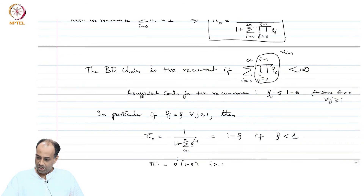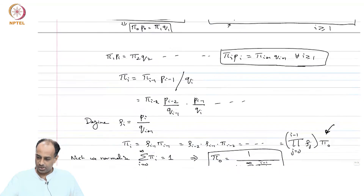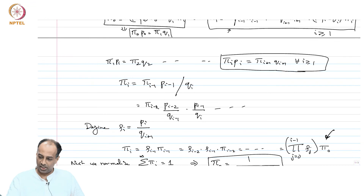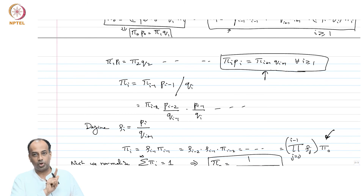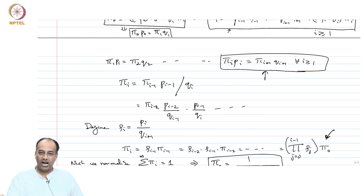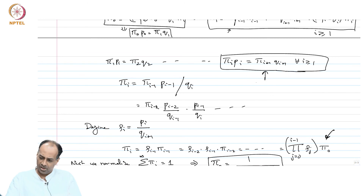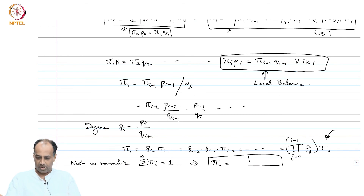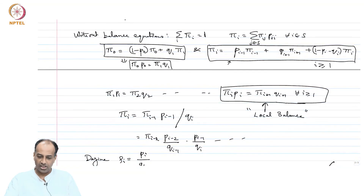These birth-death chains are very nice Markov processes which satisfy an equation where, between any two adjacent states i and i+1, the rate of transition from i to i+1 equals the rate of transition from i+1 to i. This kind of balance equation is called a local balance equation, in contrast to global balance, which refers to the usual balance equations.